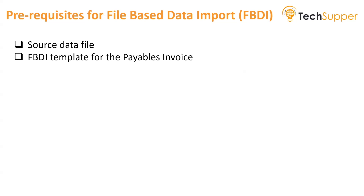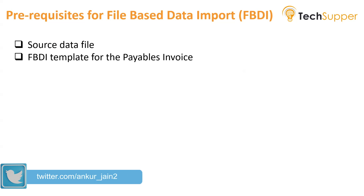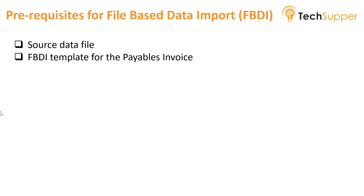You can download the template from Oracle documentation. Using that template, you prepare the file using the data that you have in the source file. You also need to create a properties file which will give instructions to Oracle ERP — for example, which business unit or ledger the data needs to go to.